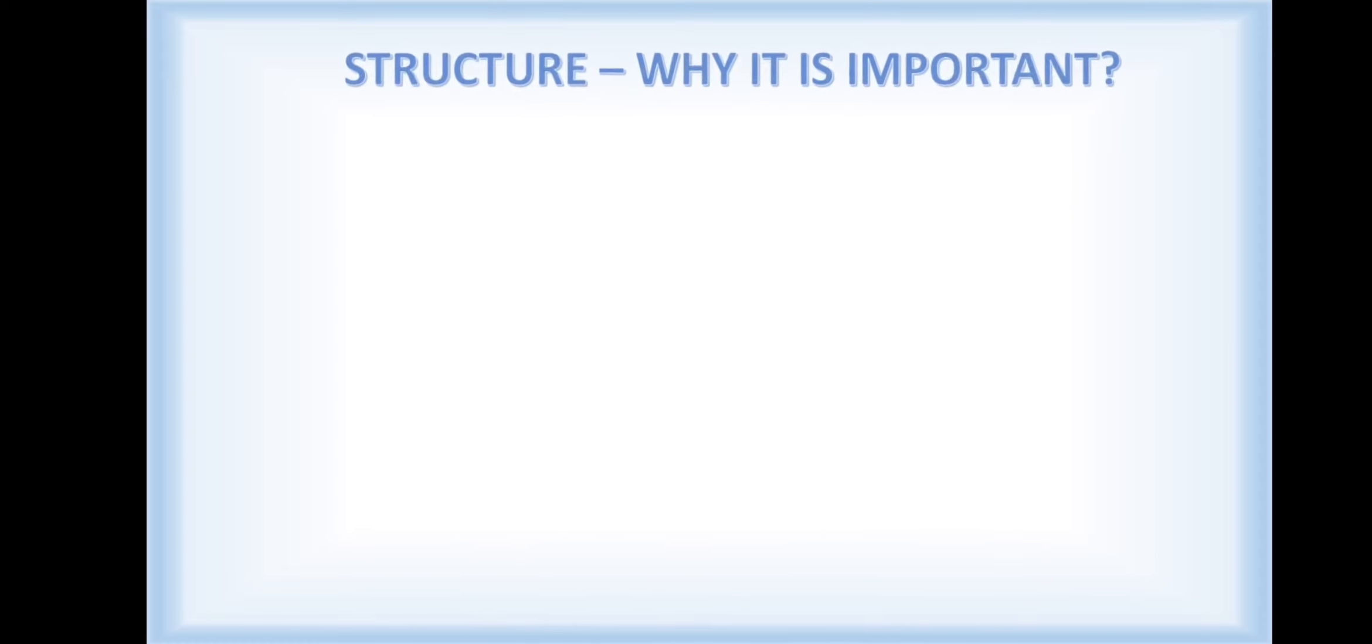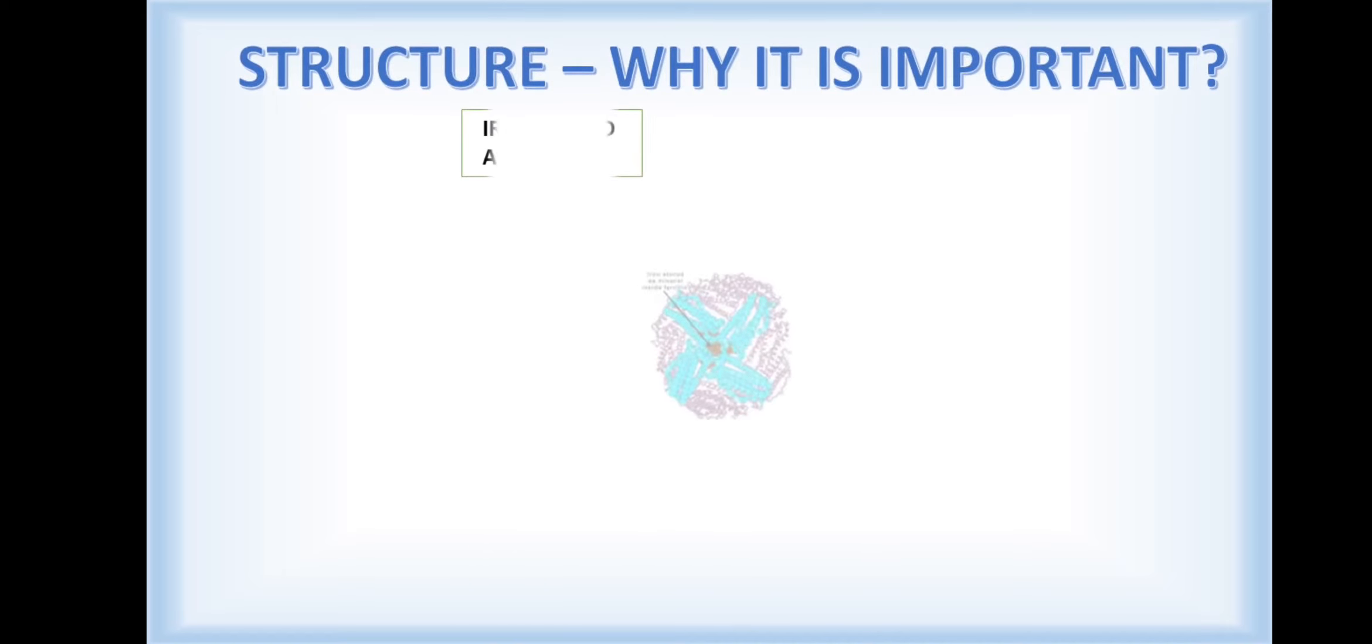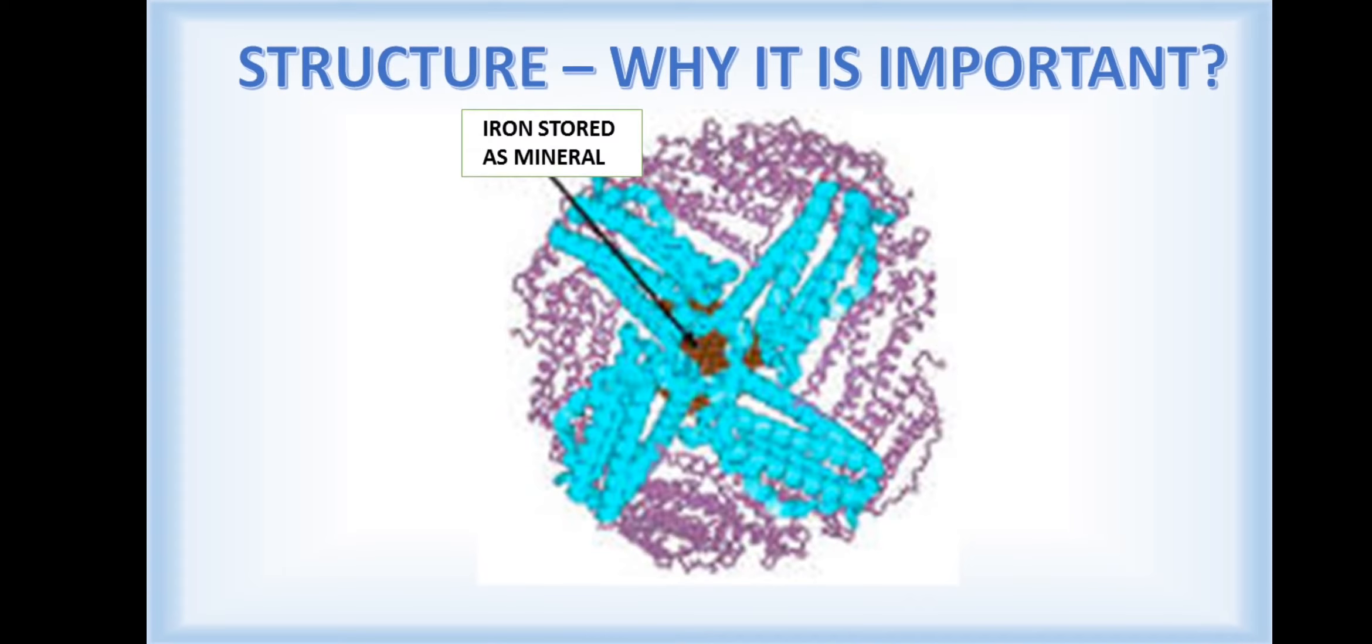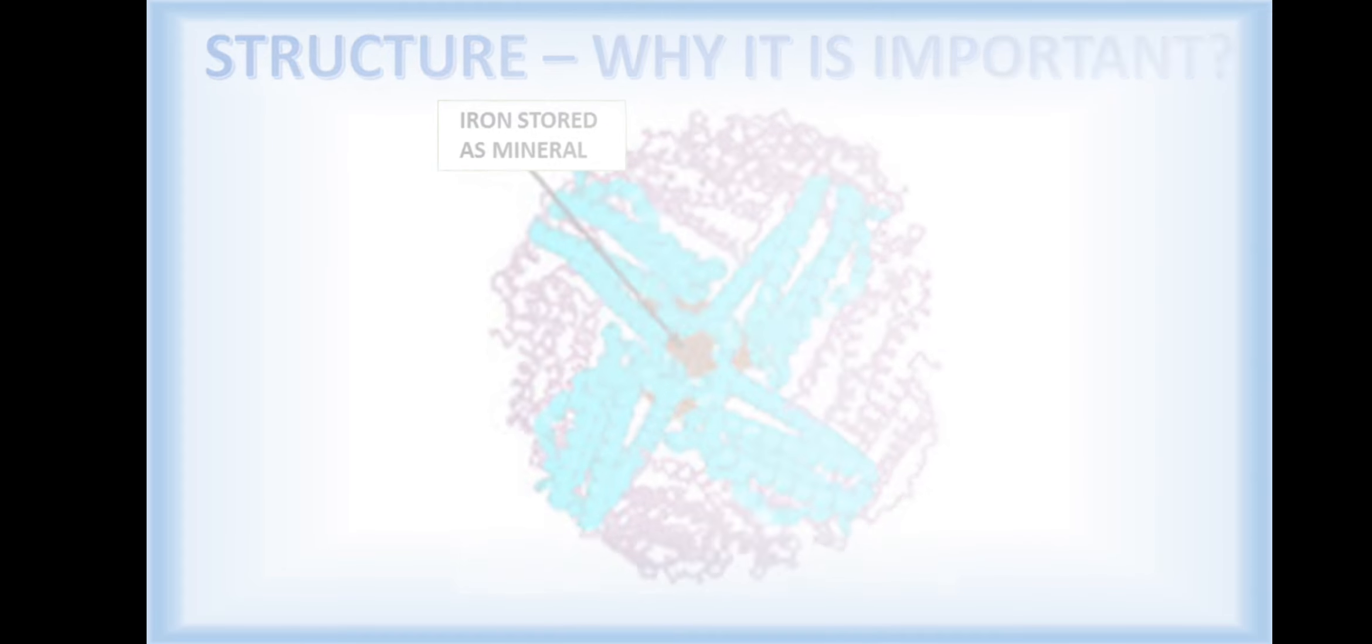Ferritin has a spherical shape and iron is stored as a mineral inside this sphere. It is incorporated in the mineral ferrihydrate, which is attached to the inner wall of the sphere. The central channel is largely made of amino acid residues of leucine and other non-polar amino acids. Ferritin's structure is extremely important for the protein's ability to store and release iron in a controlled way.